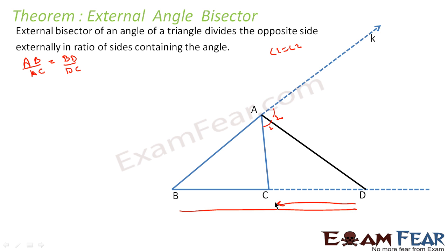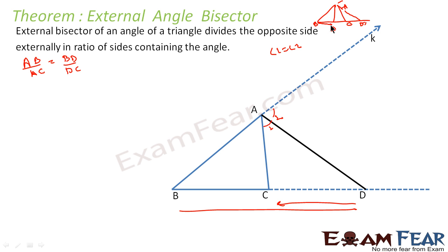We will prove this now. Just try to understand this as a memory tip. If this is the internal angle bisector of triangle ABC with point D, then AB by AC is equal to BD by DC. Here also it is almost the same. If you take the external angle bisector with point D', then AB by AC equals BD' by D'C. In both cases we go from B to D and then D to C — in the first case internally, in the second case externally.